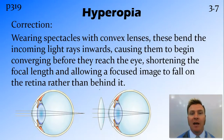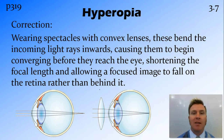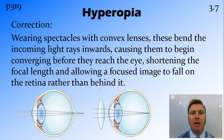Fortunately, there is an easy fix to hyperopia, and that is wearing convex lenses. These convex lenses bend the light prior to reaching the eye, meaning that the eye itself — the cornea and the lens — don't have to do as much of that focusing. They shorten the focal length, so where the light used to focus behind the retina, it now focuses on the retina.